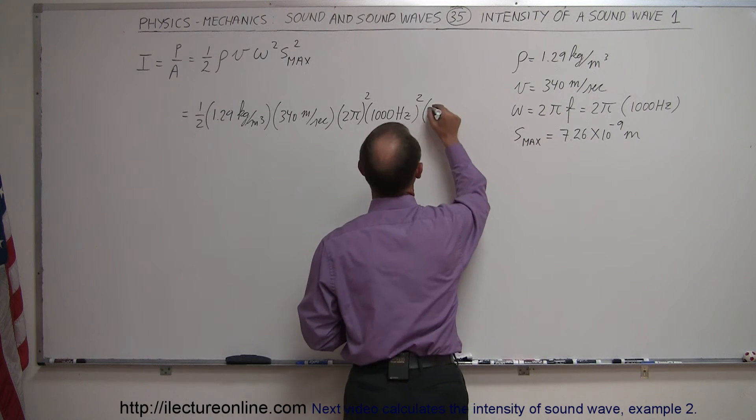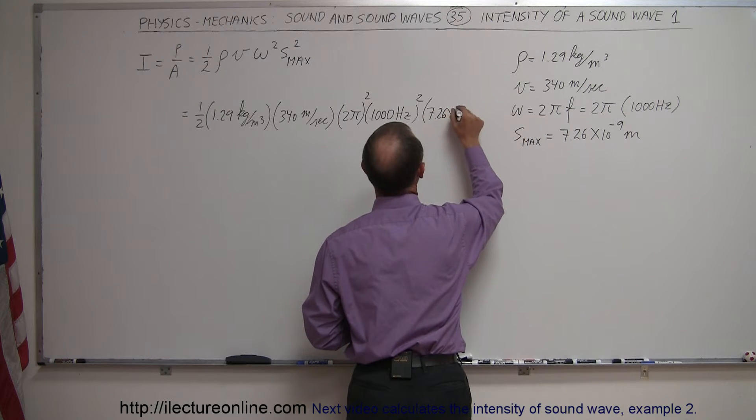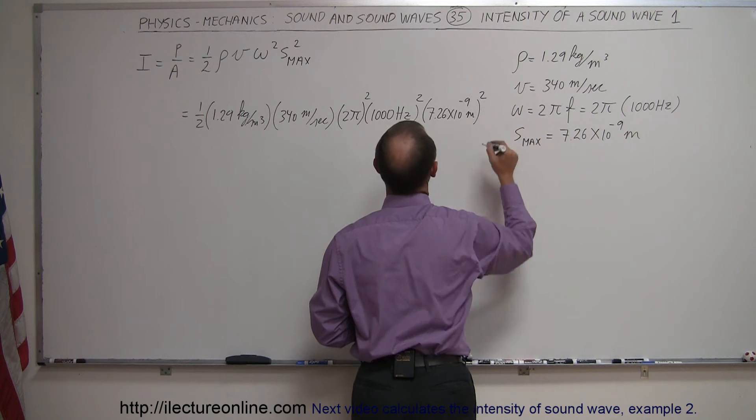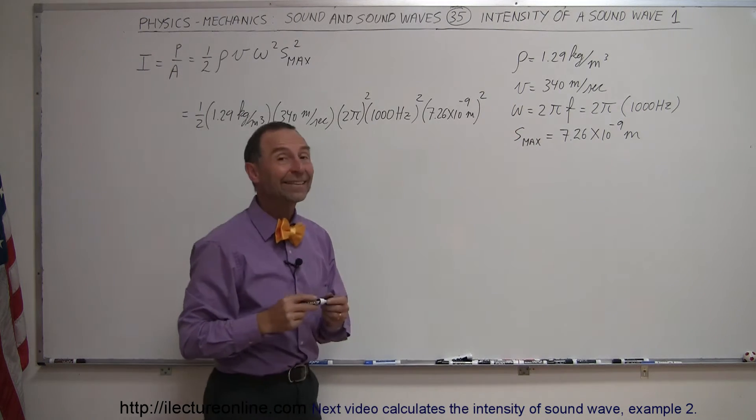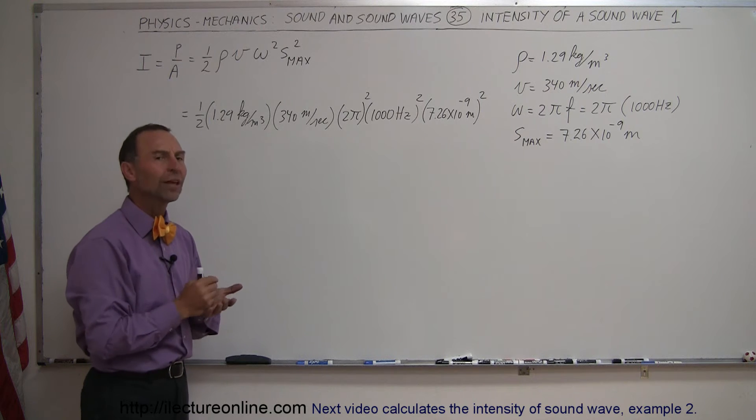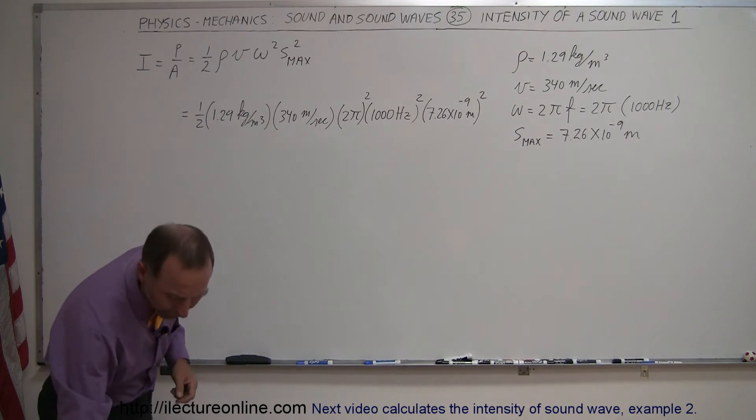So 7.26 times 10 to minus 9 meters, and we'll square that. So what we're going to do now is find the intensity of that sound wave, and then we're going to convert that into decibels, so we have a better feeling for what that is.